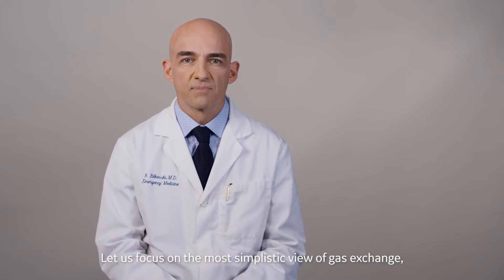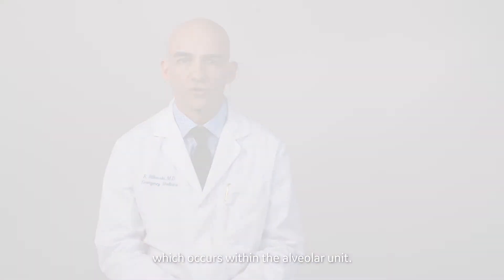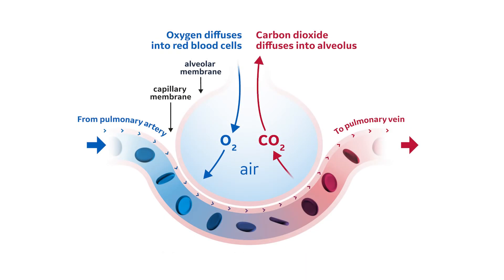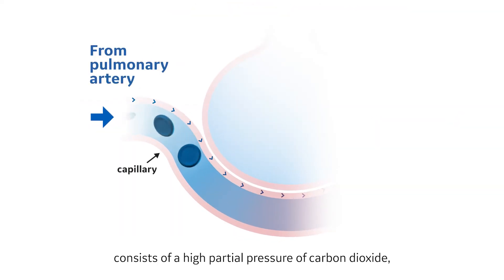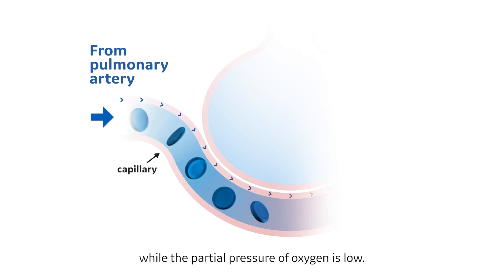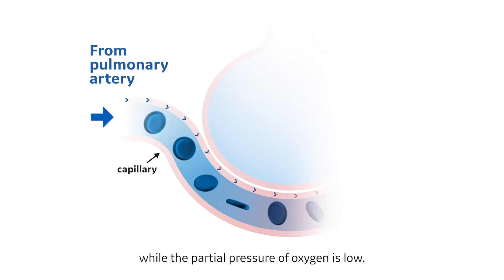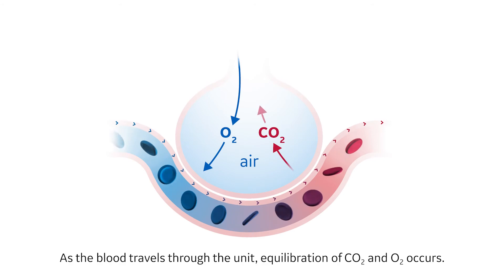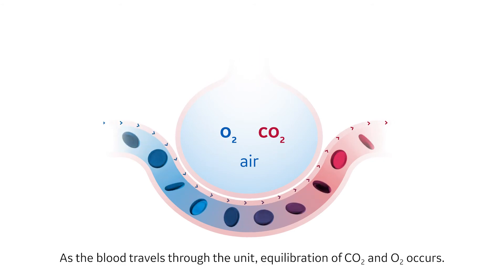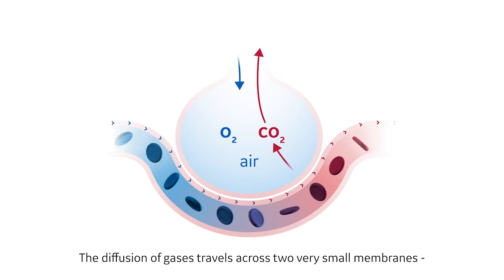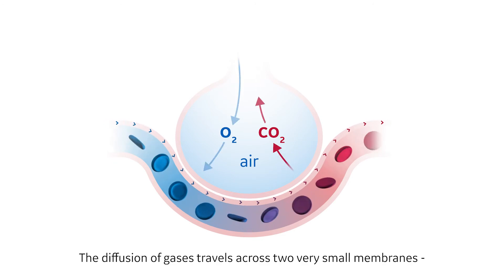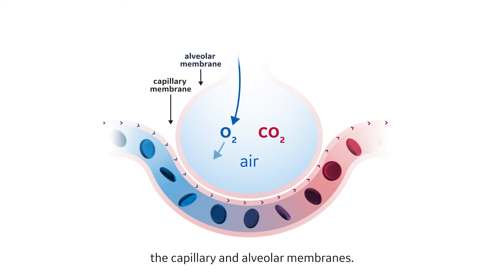Let us focus on the most simplistic view of gas exchange, which occurs within the alveolar unit. Mixed venous blood that enters the alveolar unit consists of a high partial pressure of carbon dioxide, while the partial pressure of oxygen is low. As the blood travels through the unit, equilibration of CO2 and O2 occurs. The diffusion of gases travels across two very small membranes, the capillary and alveolar membranes.